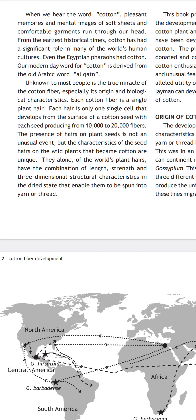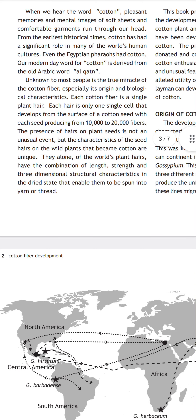Cotton is a 'white gold' and is a single plant hair that has a combination of length, strength, and three-dimensional structural characteristics in a dried state that enable them to be spun into yarn or thread.